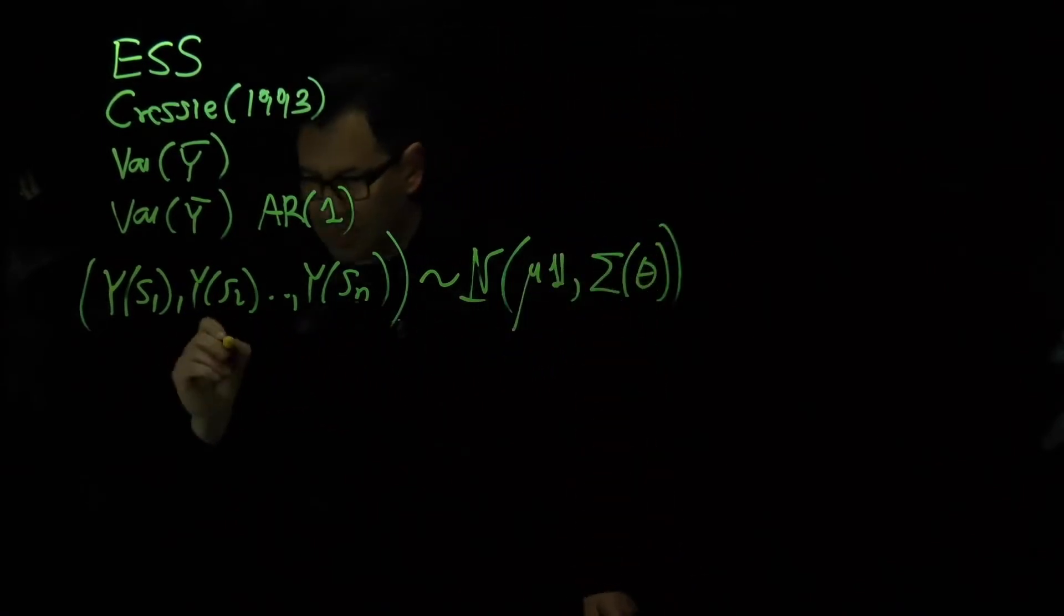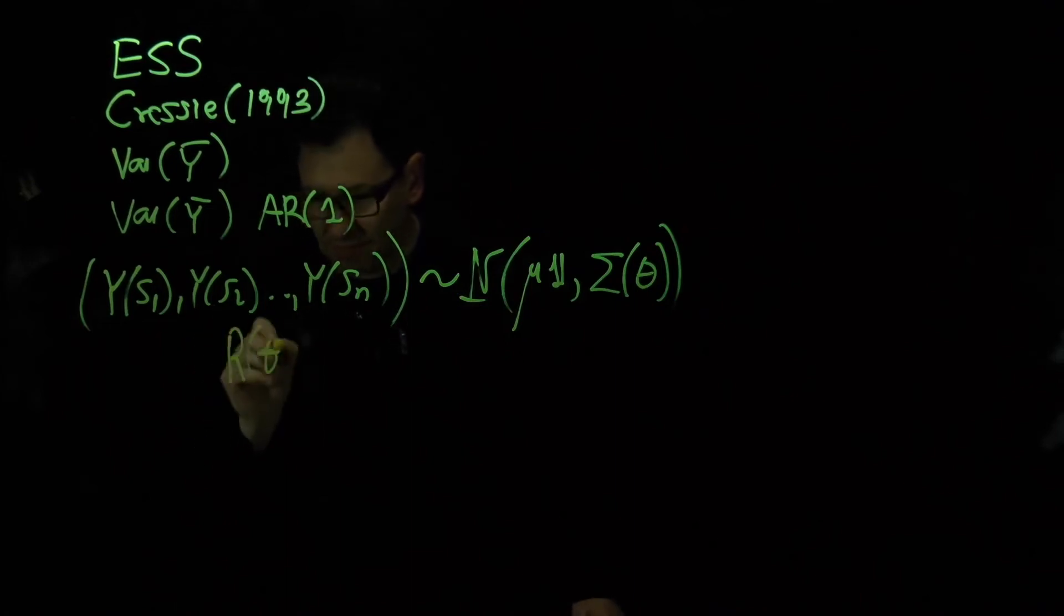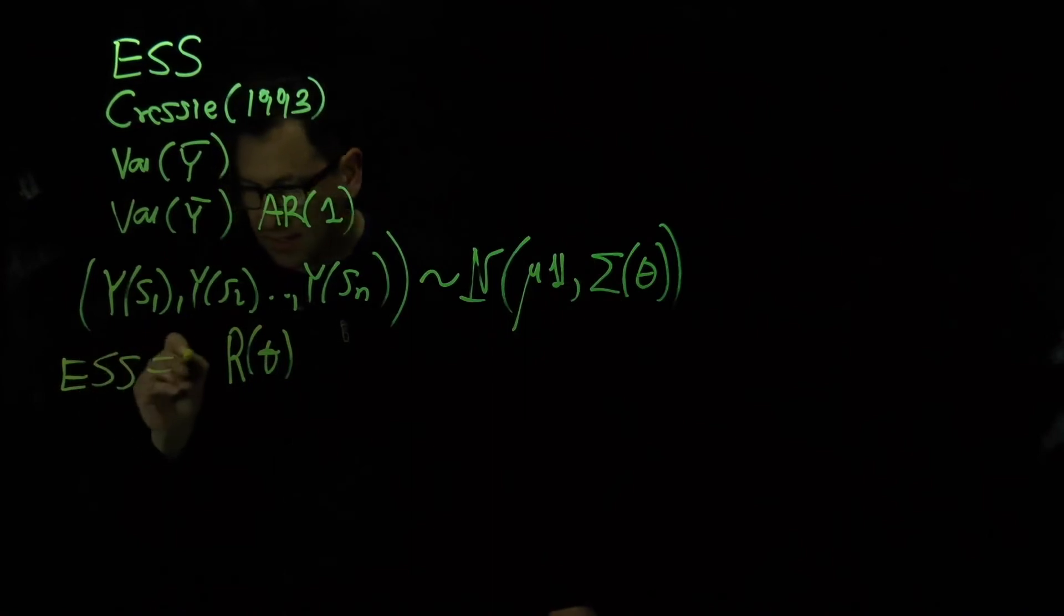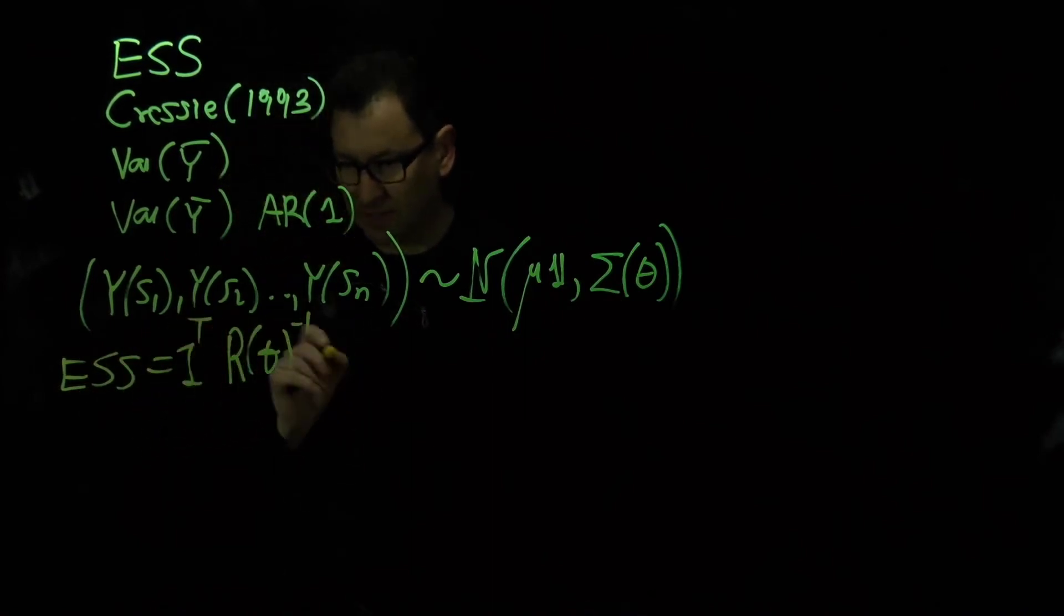So if the correlation matrix associated with this sigma is R, we define the ESS as 1 transpose R to the minus 1, 1.